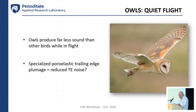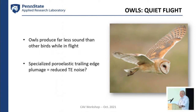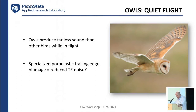One clue for making trailing edge noise quieter comes from owls, which fly much more quietly than other birds. Biologists have found that owls have specialized plumage whose net effect is that their trailing edges are more porous and more elastic than other birds. The idea is that a poro-elastic trailing edge could reduce trailing edge noise.